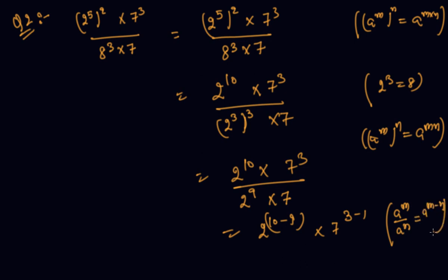In the bracket I am writing all the formulas I am using from the laws of exponents. So this gives 2 raised to power 1 into 7 raised to power 2, which means 2 into 7 squared. 7 squared is 49, and 49 into 2 is 98. So 98 is our answer.